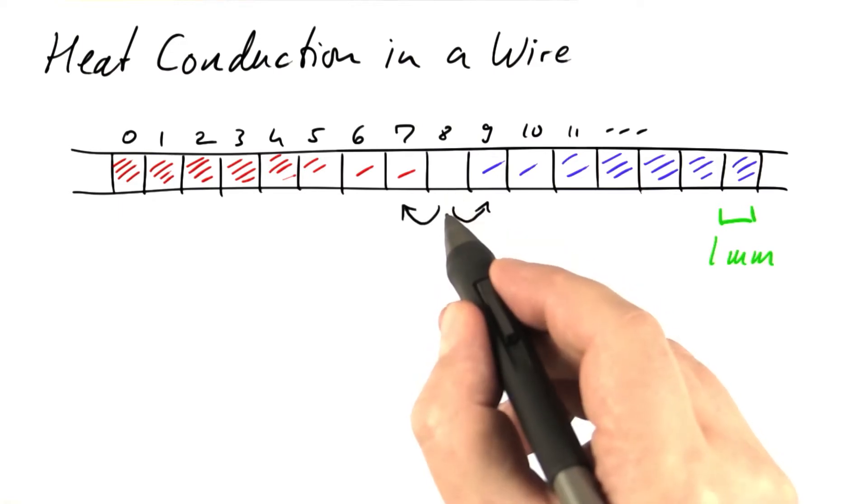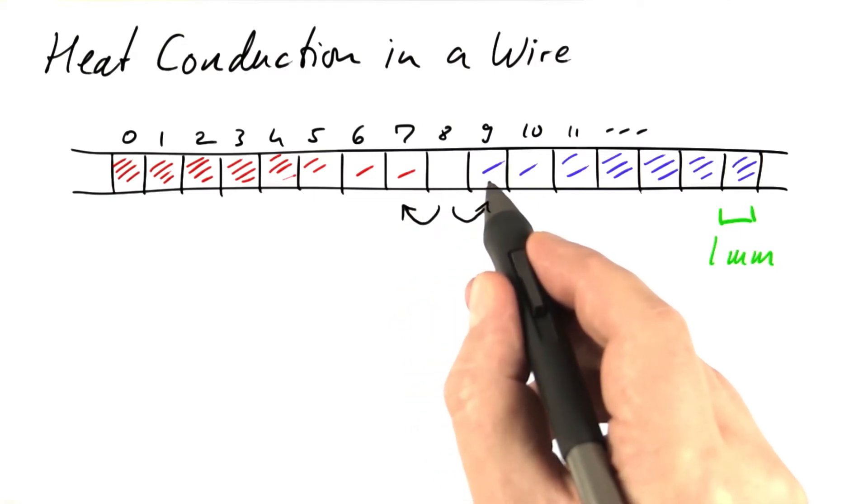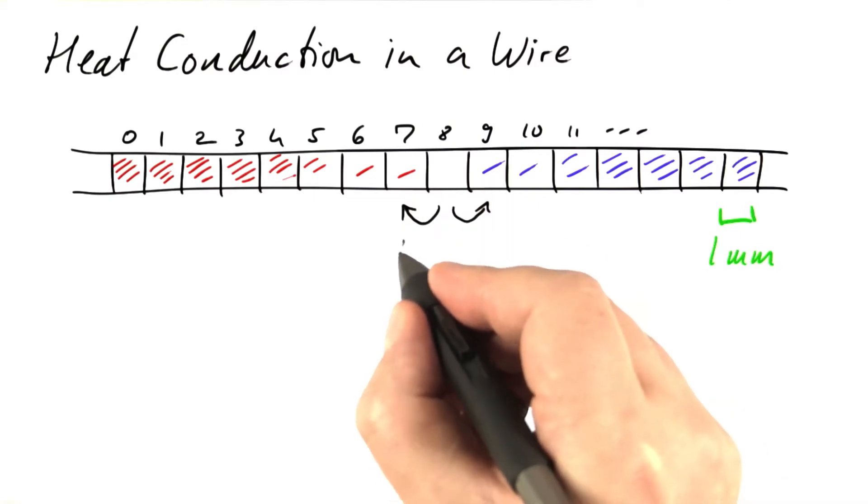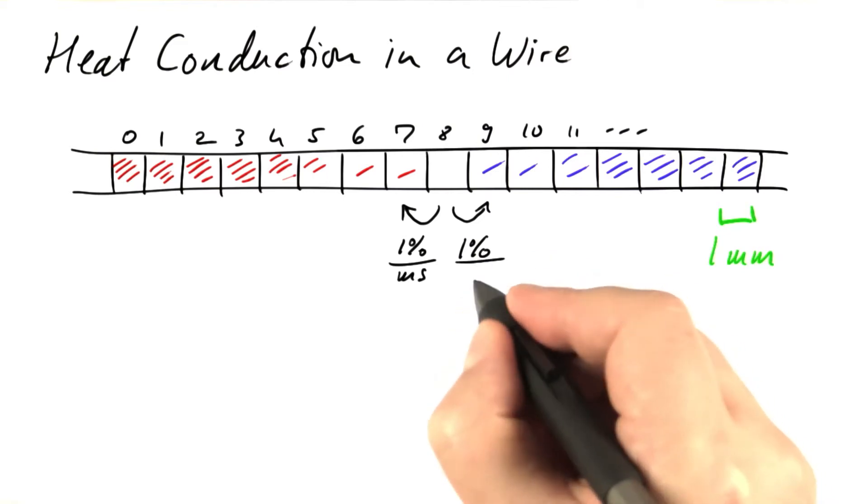Compartment number eight loses a specific percentage of its energy per time to compartments number seven and number nine. To be specific, let's say it's going to lose one percent per millisecond to the left and one percent per millisecond to the right.